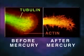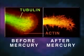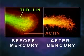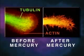Shown here is a neurite growth cone stained specifically for tubulin and actin, before and after mercury exposure. Note that the mercury has caused disintegration of tubulin microtubule structure.